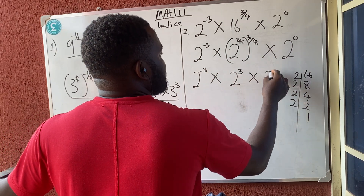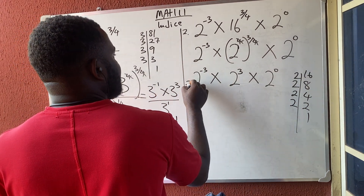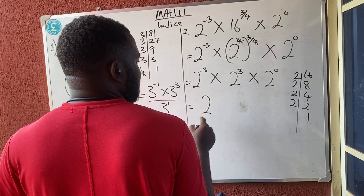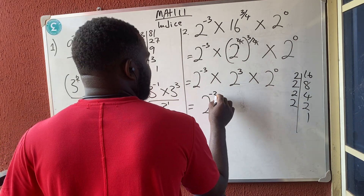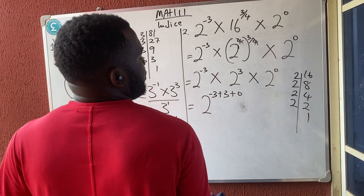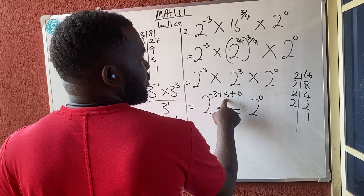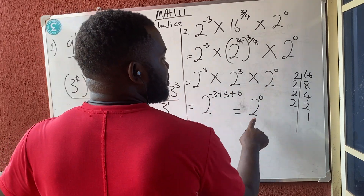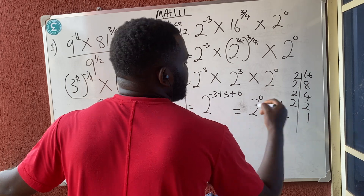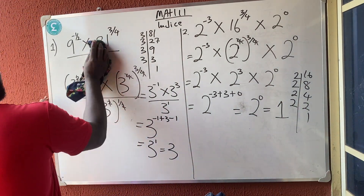This can cancel this when they multiply, so I have 2 raised to power minus three, times 2 raised to power three, times 2 raised to power zero. Apply the law — bases are the same, do addition because of multiplication: minus three plus three plus zero. This gives 2 raised to power zero, because minus three plus three is zero, plus zero is zero. And 2 raised to power zero is one. So my answer is one.